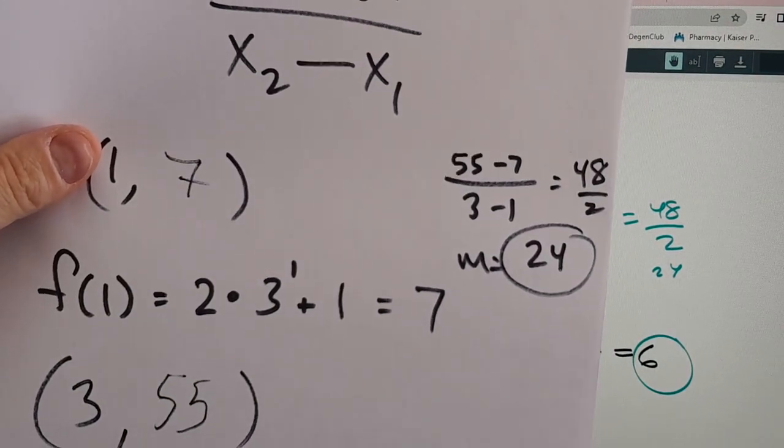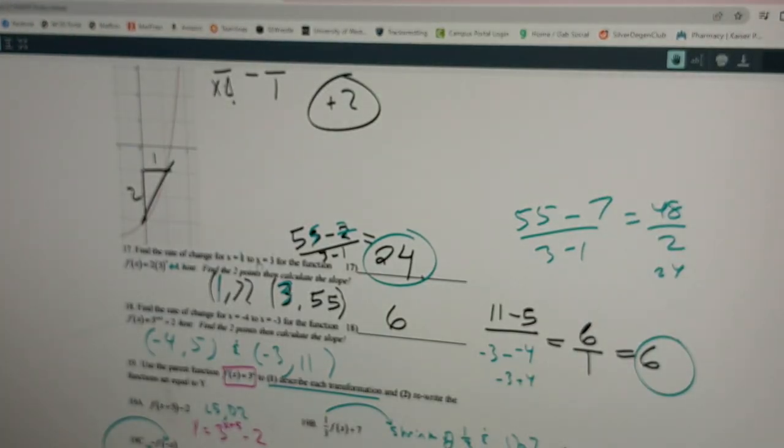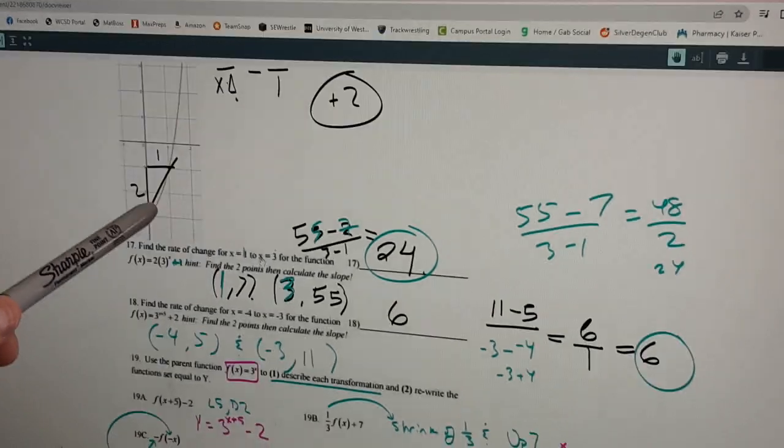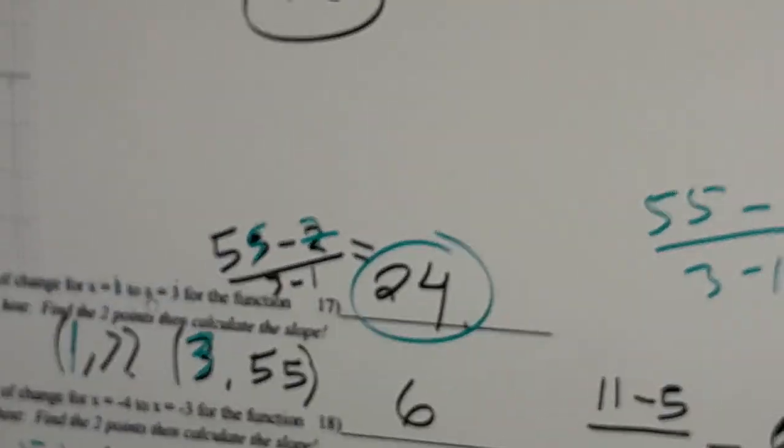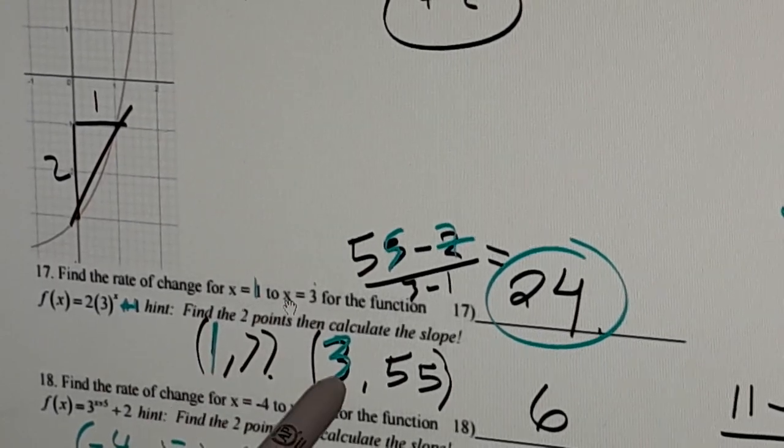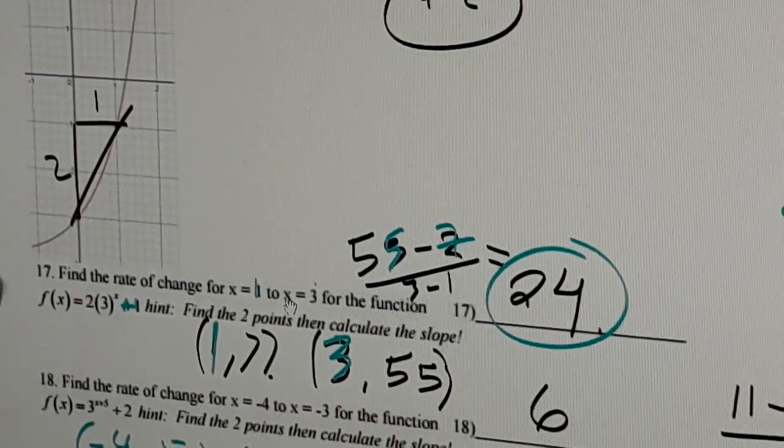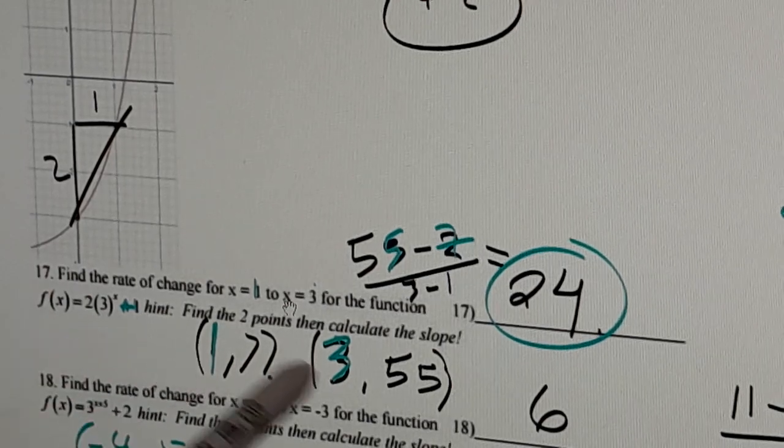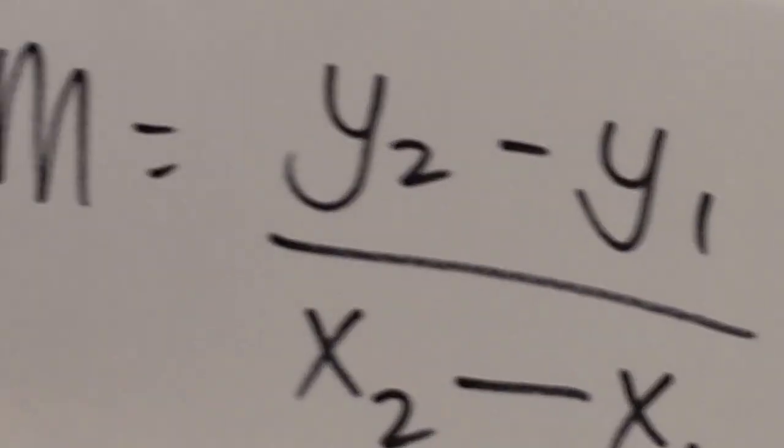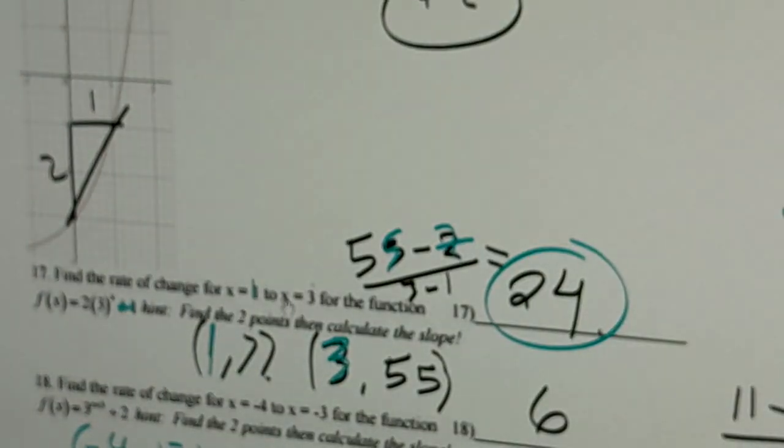And that ends up giving you the average rate of change between those two points. So let's recap: you have a given x value, they gave you 1 for an x value, they gave you 3 for an x value. 1 and 3. You plugged in the 1, you got 7. You plugged in the 3, you got 55. Where'd you plug it in? The original equation here. So now I've got x's and y's. Once you've got x's and y's, that's where you use this slope equation. Plug them in, make sure they're in the same order.